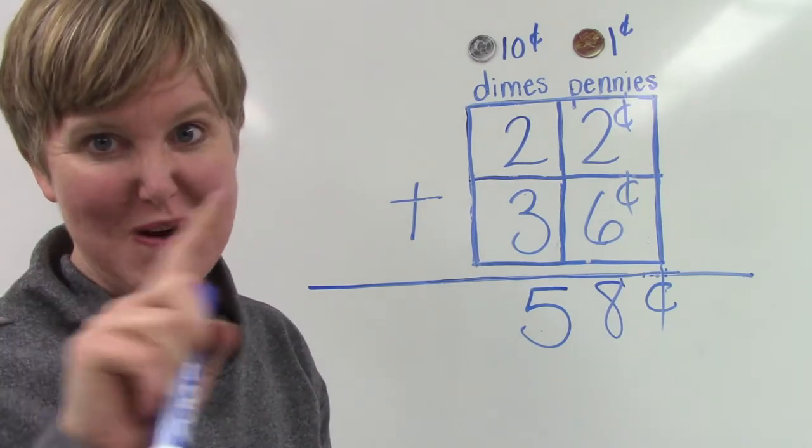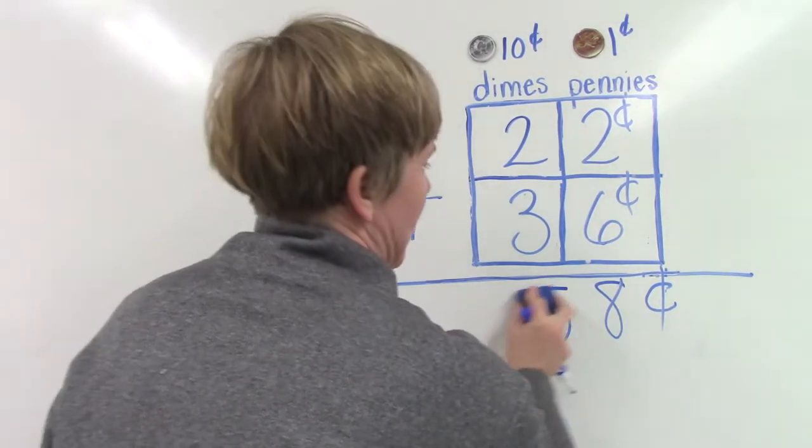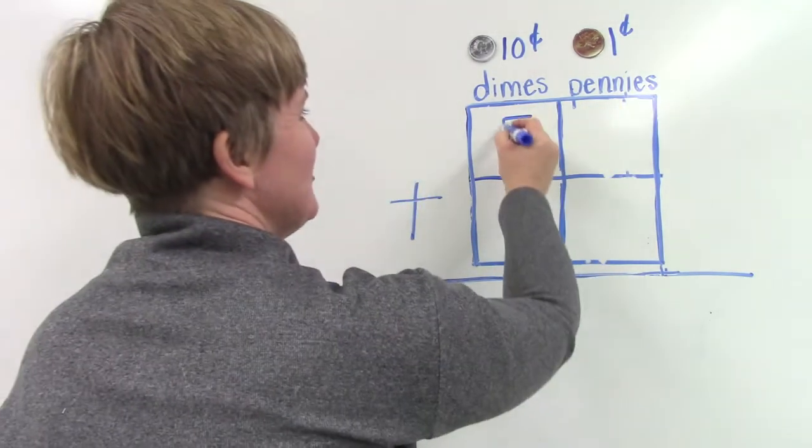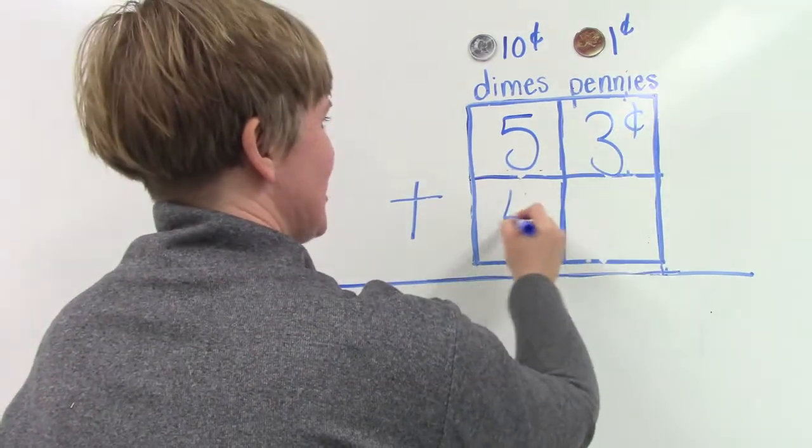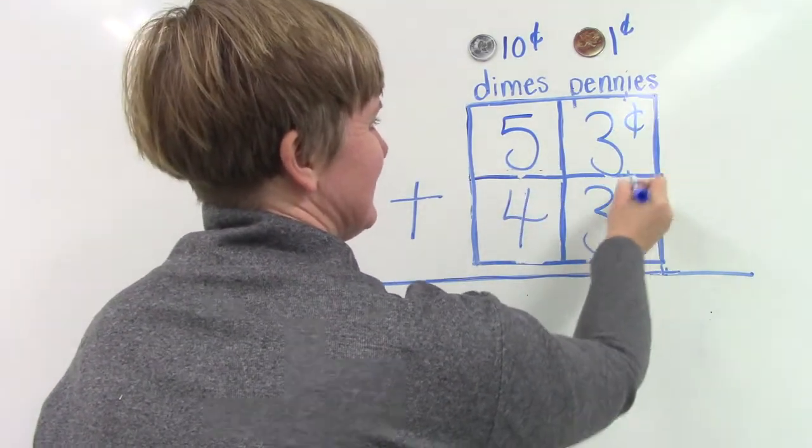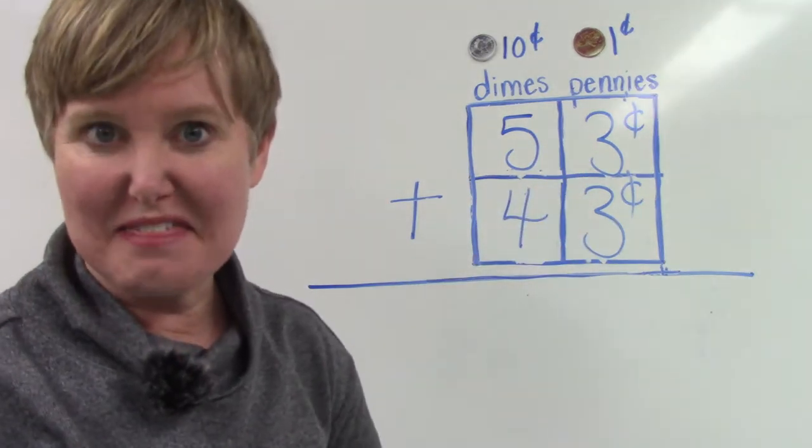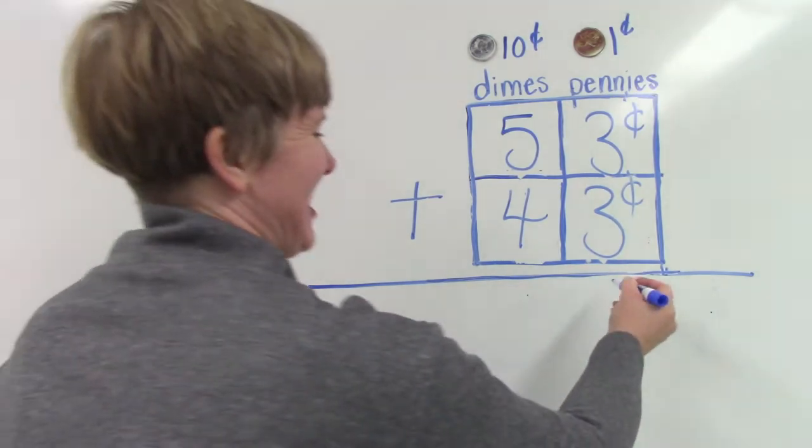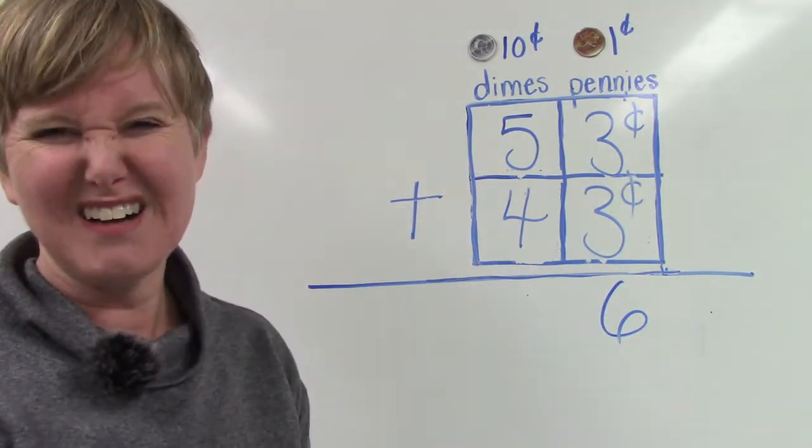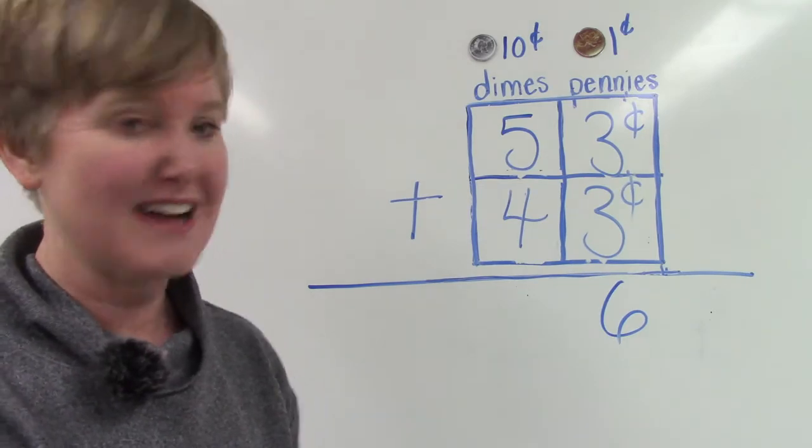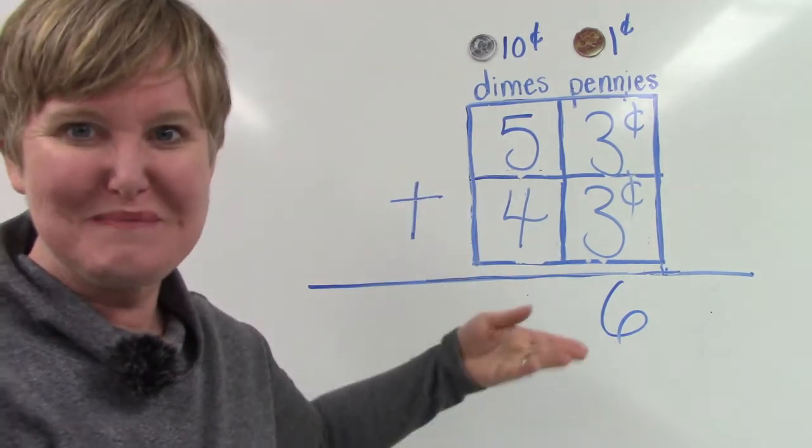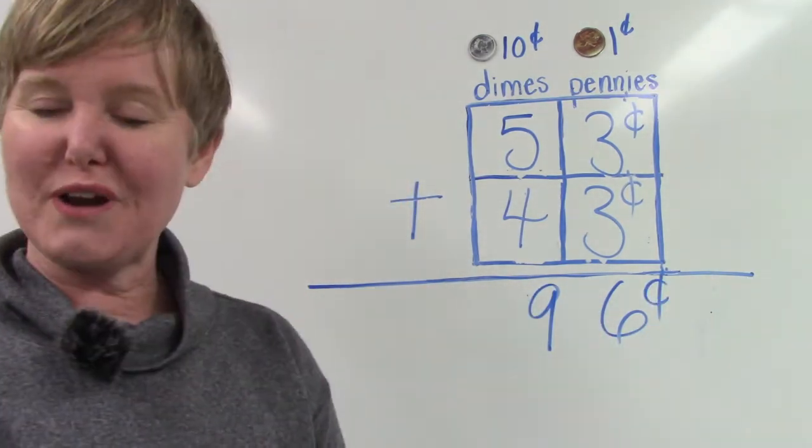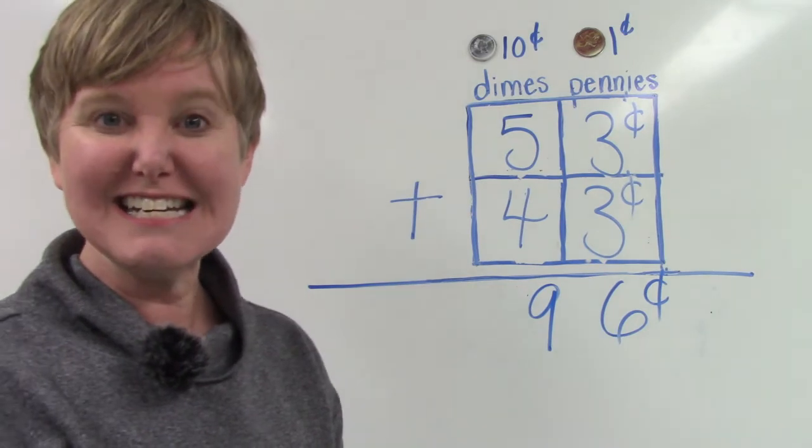We're going to practice this one more time. I'm going to erase these numbers. We are going to add fifty-three cents plus forty-three cents. Well, we know what three plus three is. That is one of our double facts. What is it? Six. You're right. And then five plus four. Well, that's a double plus one fact. Four plus four is eight. Plus one more is nine. Fifty-three cents plus forty-three cents is ninety-six cents.